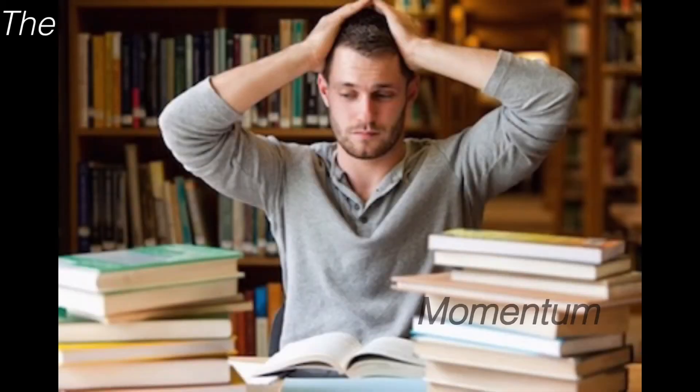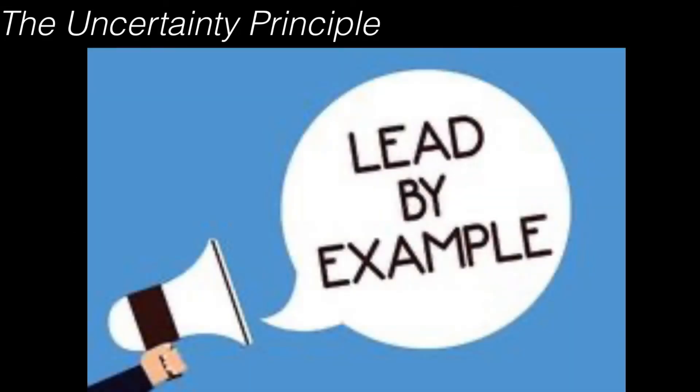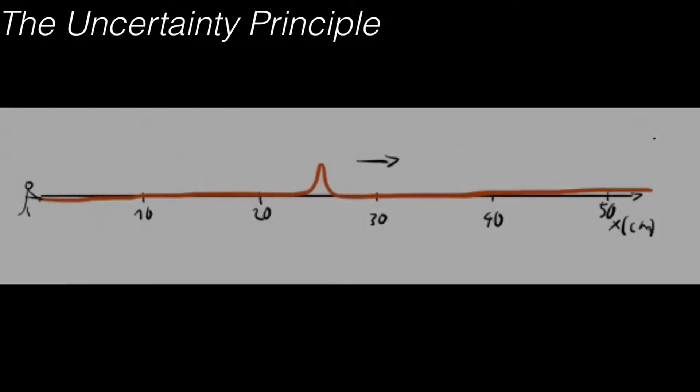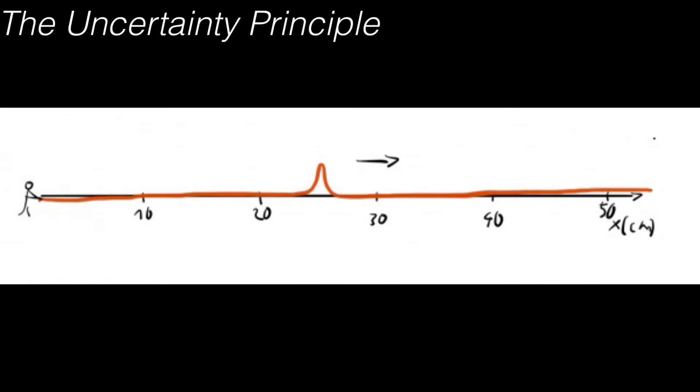Momentum is Planck's constant divided by the wavelength. Let me think of an example to better describe it. Let's say you and your friend are grabbing a rope, and so you make a jerk on the rope, a very strong jerk. There's one kick that basically travels from your end to your friend's end. If you ask your friend, hey man, where is the position of the wave? Well, it's very easy to tell.